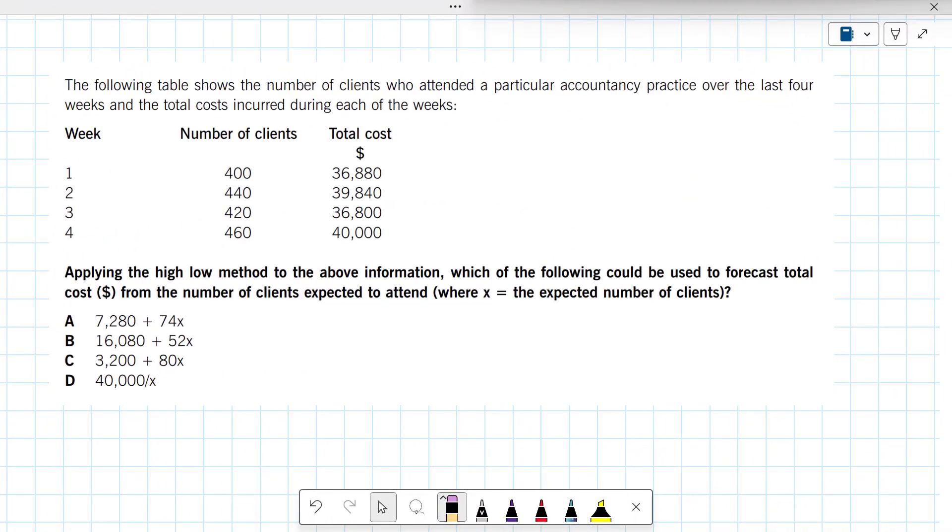Let's take it from the top. We have a table of data, and this data shows the number of clients who attend a particular accountancy practice over the recent weeks and then the total cost. So we've got number of clients and total cost.